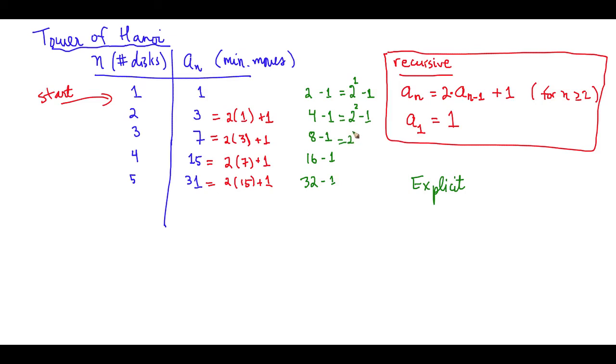This is 2 to the second minus 1. This is really 2 to the third minus 1. 16 is 2 to the fourth minus 1. And of course, 32 is 2 to the fifth. And we have minus 1 here.